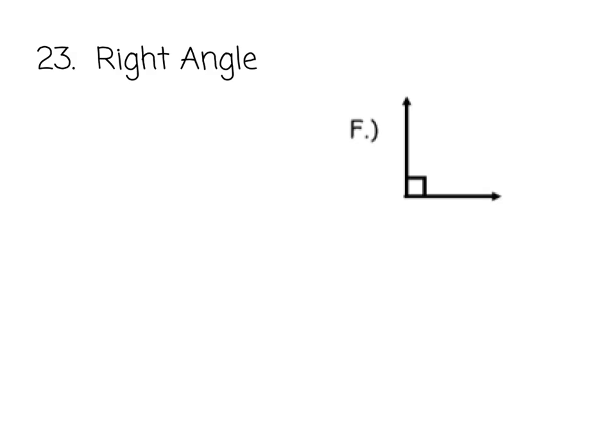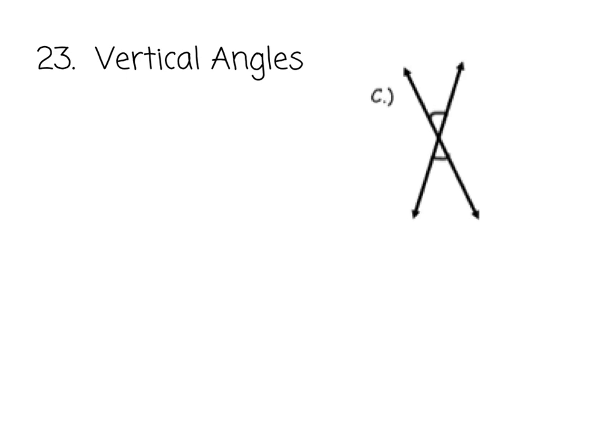The next term is a right angle. A right angle measures exactly 90 degrees. So if x is the angle, it's exactly 90 degrees.